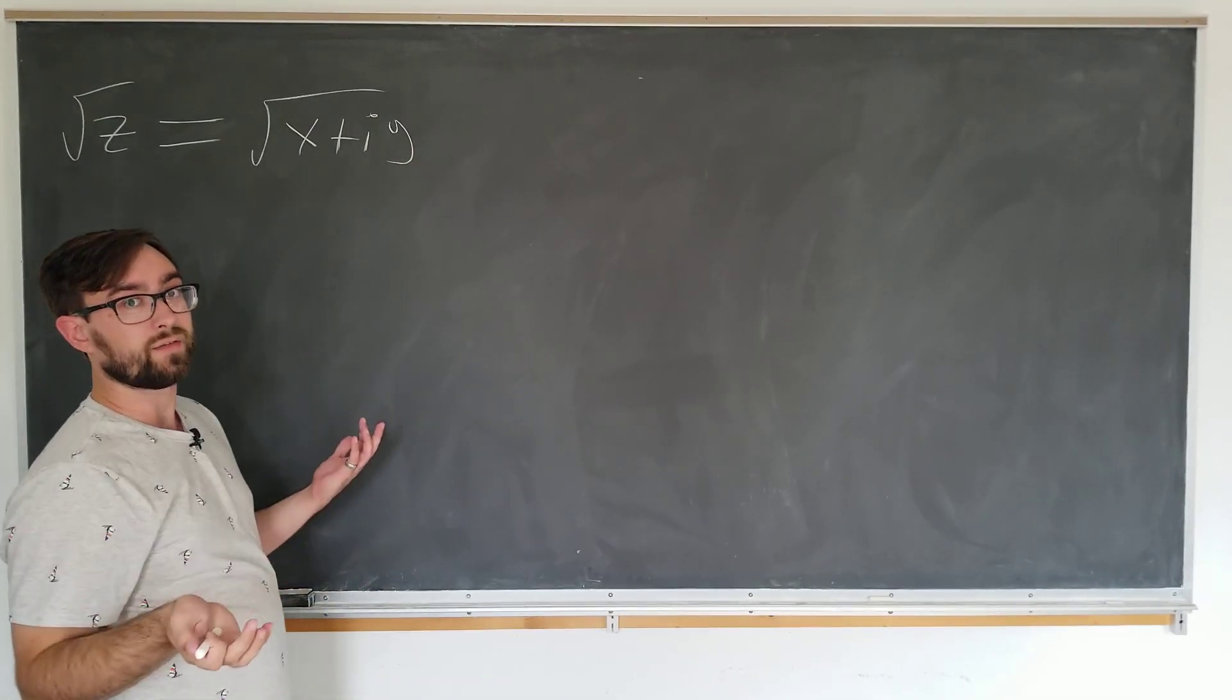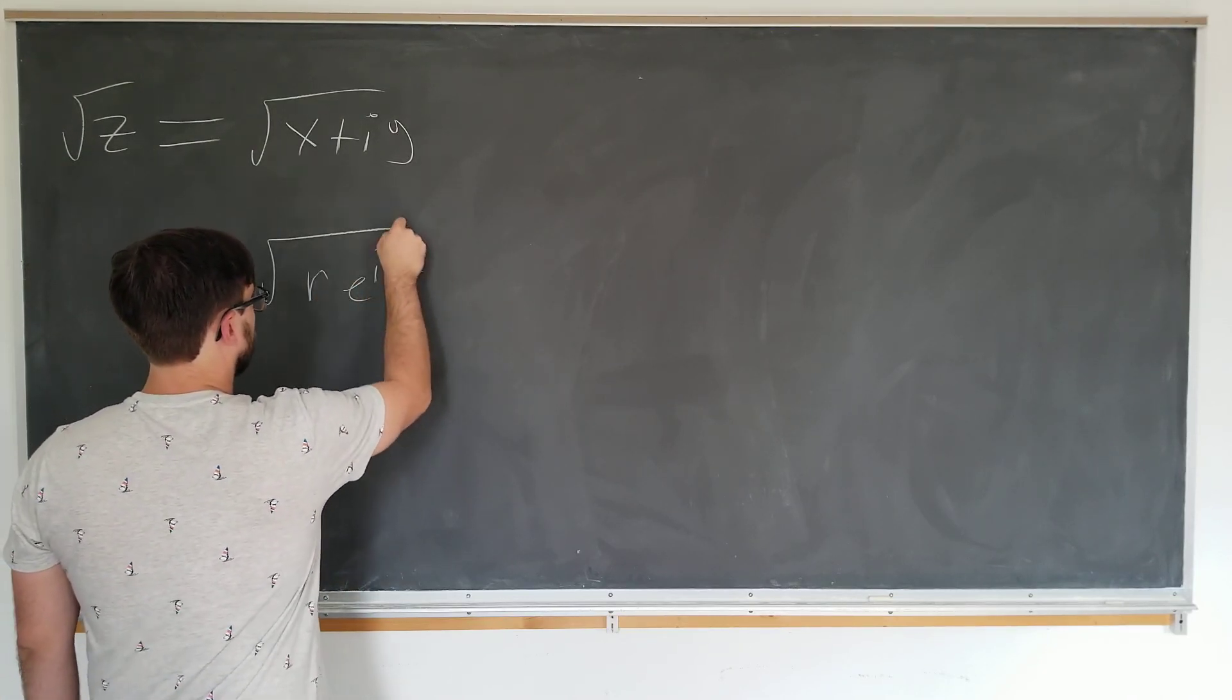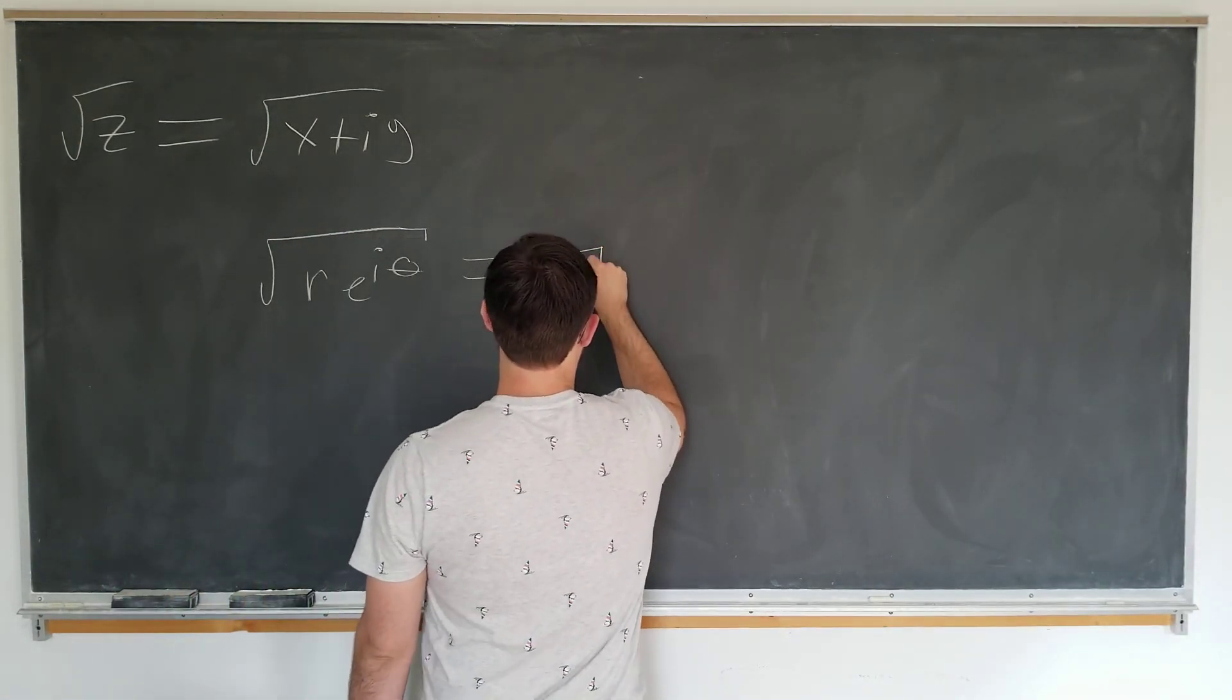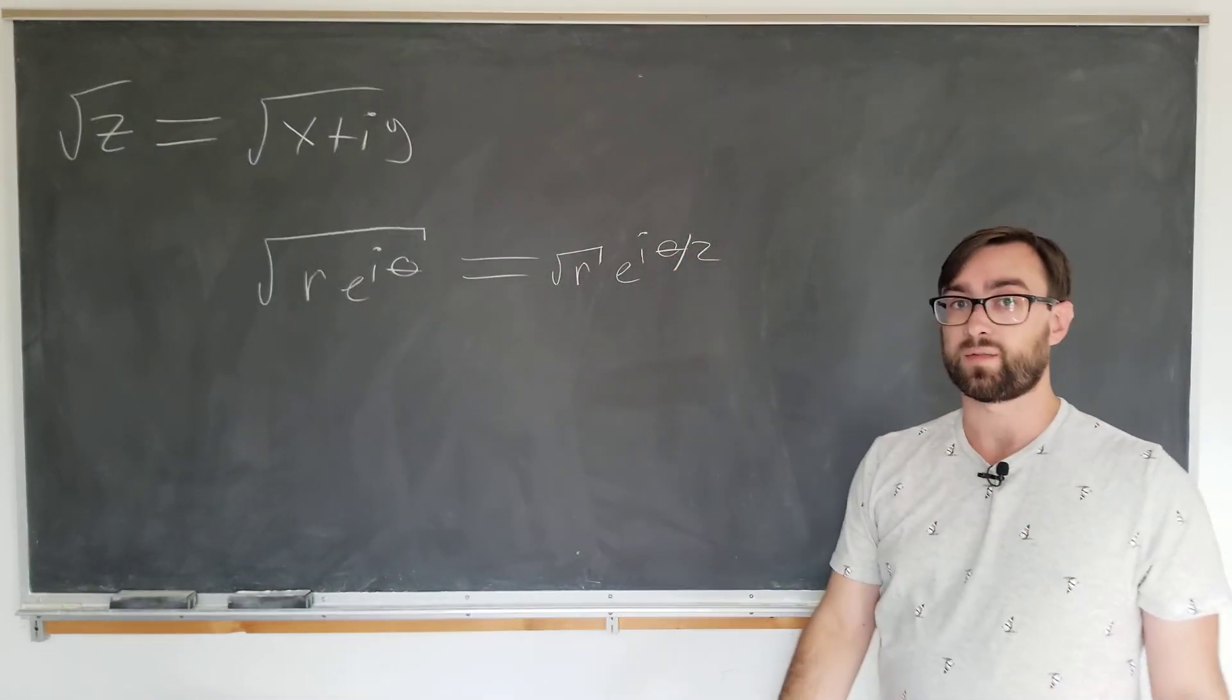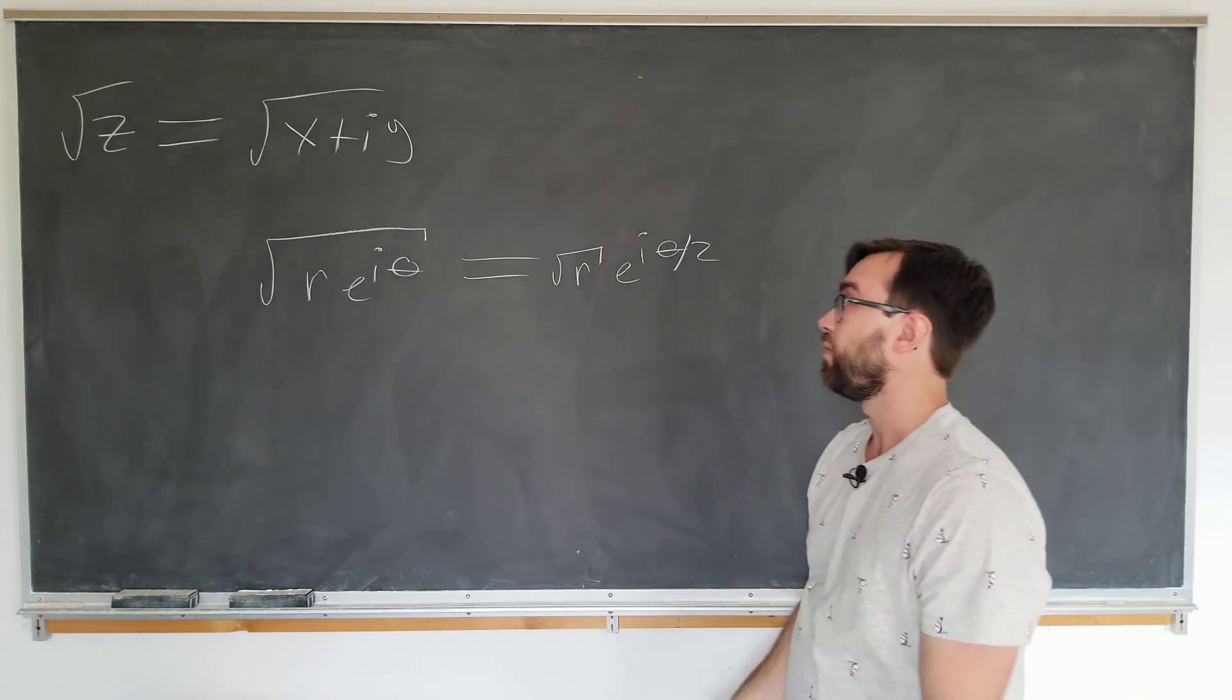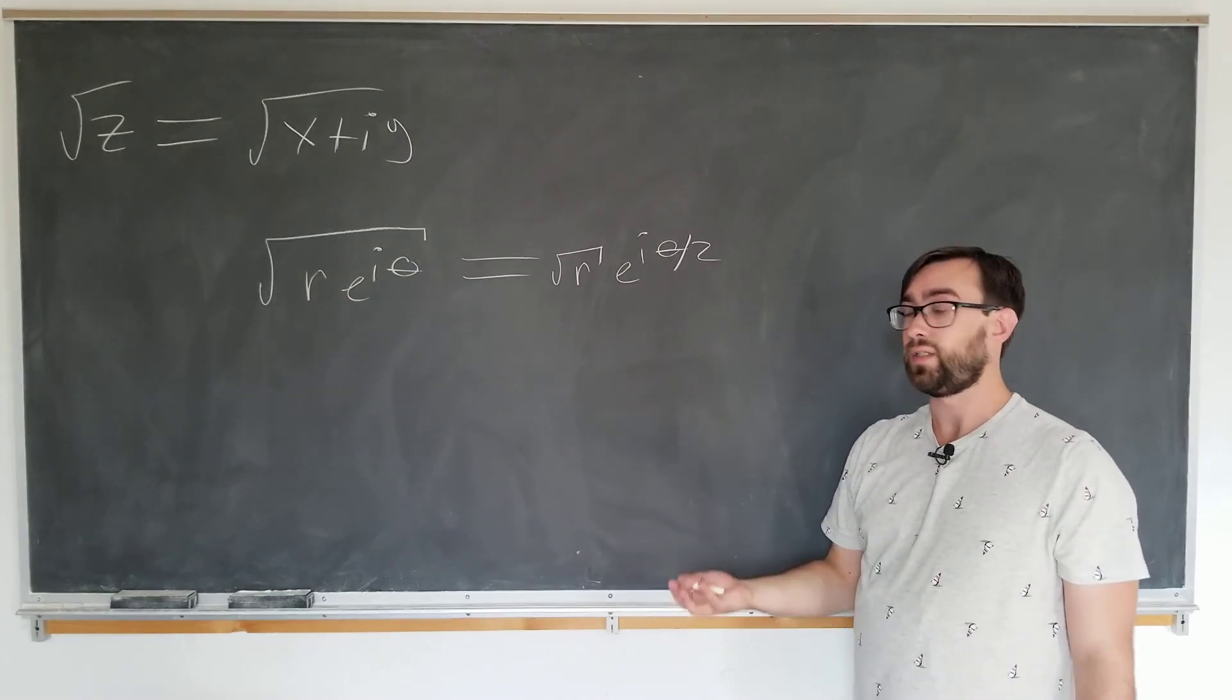So this is obviously easy enough to evaluate if you had it in polar form. If we wrote it in terms of r e to the i theta, of course the result would simply be the square root of r e to the i theta over 2 using the properties of exponentials. So if we want to evaluate the square root of z in Cartesian form, first we must convert the x plus i y form to the r e to the i theta form, which is pretty straightforward.